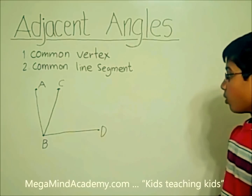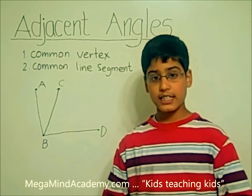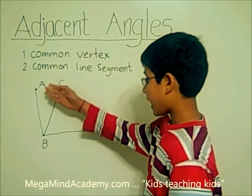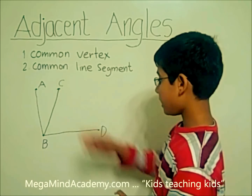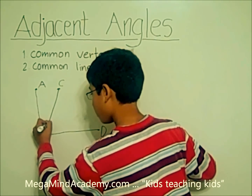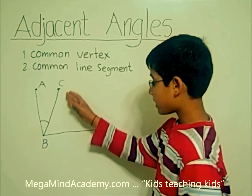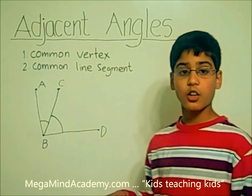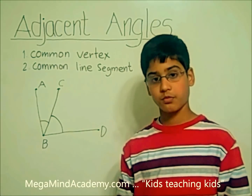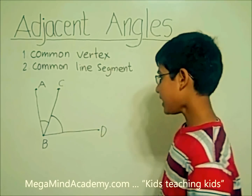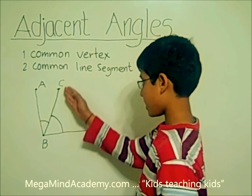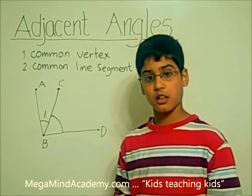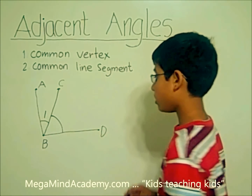Now, when these lines connected, they formed some angles. Like angle ABC, or like angle CBD. And they also formed other angles too. Now, let's name angle ABC angle 1, and let's name angle CBD angle 2.